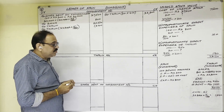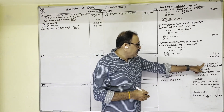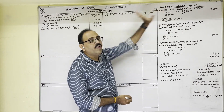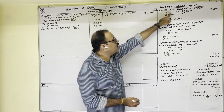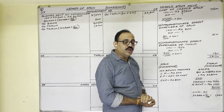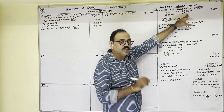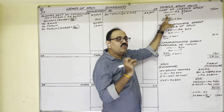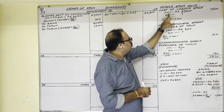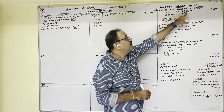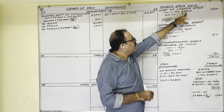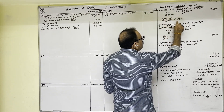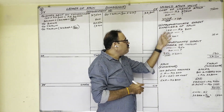Next, unsold stock value calculation: 100 machines were sent, consignee sold 80 machines, so 20 machines are unsold. We calculate the value of those 20 machines. When invoice price is given, while calculating unsold stock value we consider only the invoice price of total goods. Total goods invoice price is 37,500. We want 20 machines' invoice price: 37,500 ÷ 100 × 20 = 7,500. Then we add proportionate direct expenses of consignor and consignee.